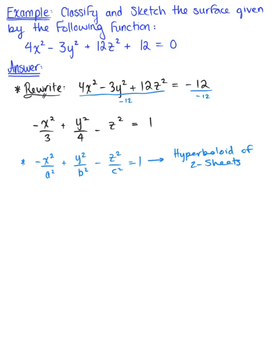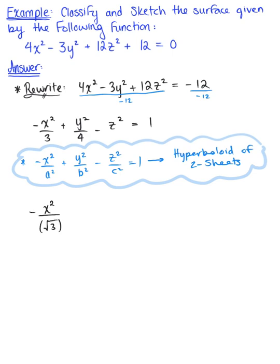So I'm going to take this one extra step further so that we can see the coefficients associated with each variable. I'm going to rewrite our surface here as -x²/(√3)² + y²/(±2)² - z²/(±1)² = 1. So we certainly have a hyperboloid of two sheets here.